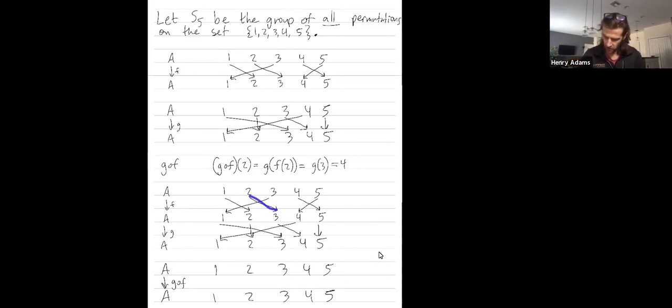All I do is straighten out these strings. F takes 2 to 3 and then G takes 3 to 4. So the composition had better take 2 to 4. I've just taken this string and straightened it out.